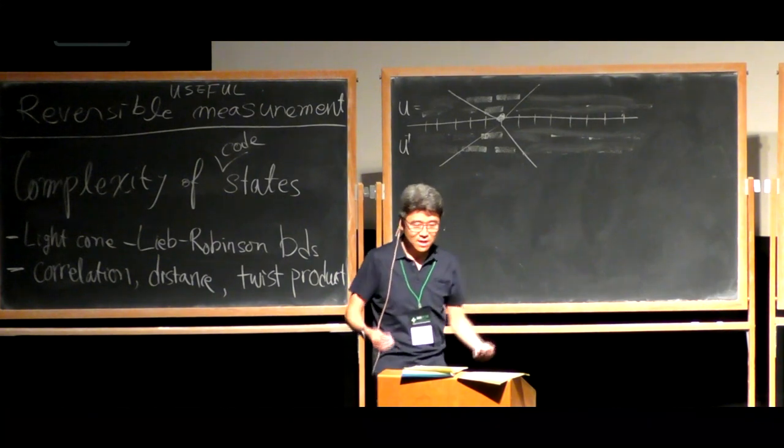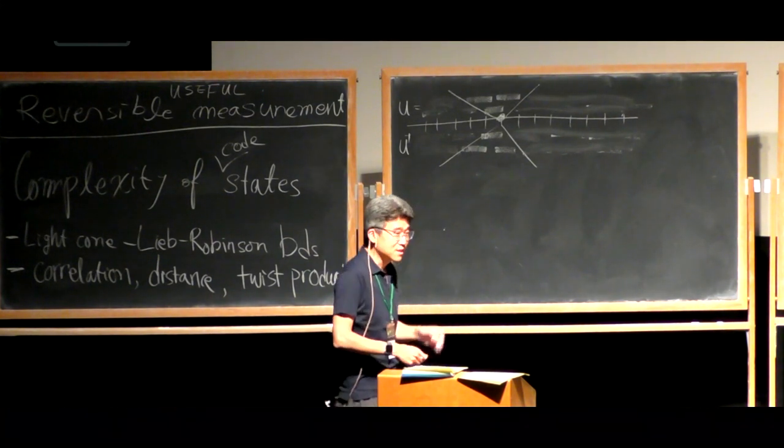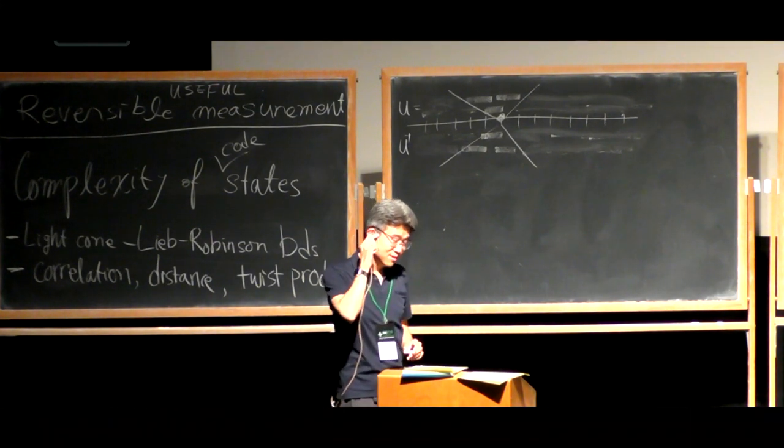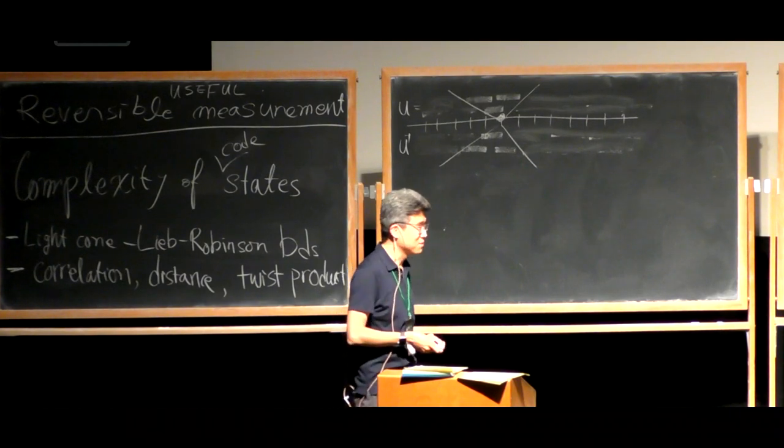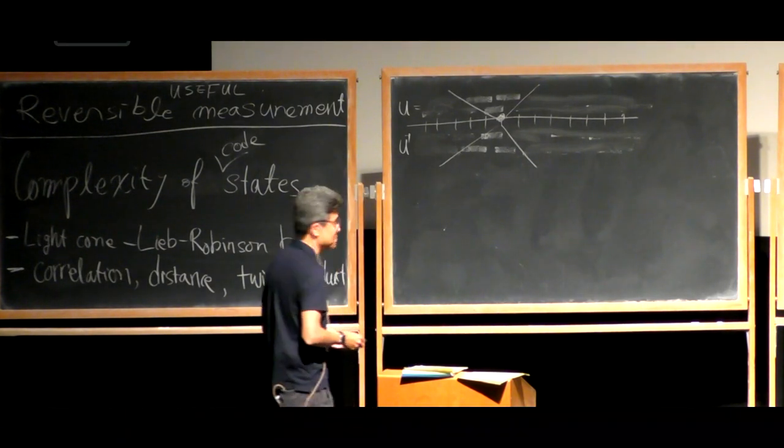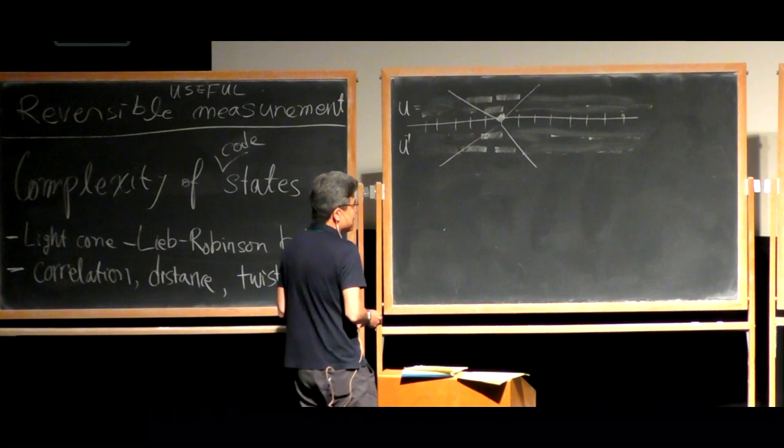So what you're left with is the light cone for an observable emanating from the spatial location. And the width, the final width, is depending proportional to the depth of the quantum circuit. So this part is called the light cone. And any argument that is based on this kind of picture will be called a light cone argument. It appears here and there sometimes.